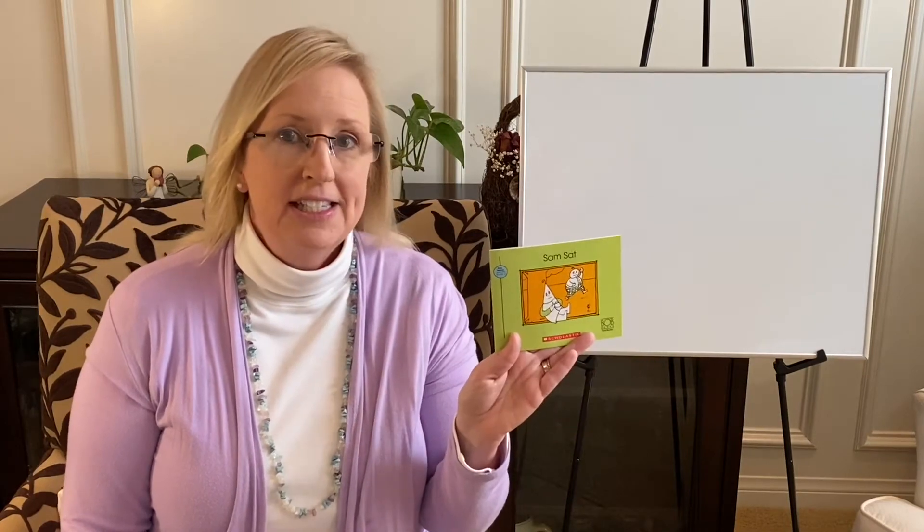Hello and welcome. I am the Mom Teacher and I'm bringing you today the continuation of Sam and Matt. This one is Sam Sat. It's a simple reader by Scholastic and it has a lot of verbs in there. We're going to talk a lot about the past tense and ways to indicate that something has already happened.